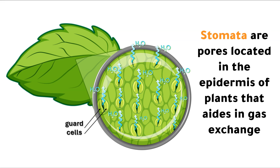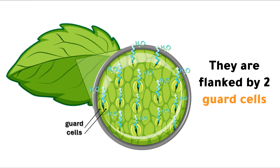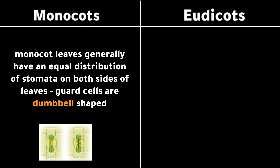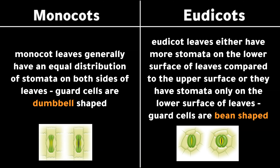Stomata are pores located in the epidermis of plants that aid in gas exchange; they are flanked by two guard cells. Monocot leaves generally have an equal distribution of stomata on both sides of leaves, and their guard cells are dumbbell-shaped. Eudicot leaves either have more stomata on the lower surface or stomata only on the lower surface, and their guard cells are bean-shaped.